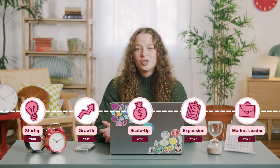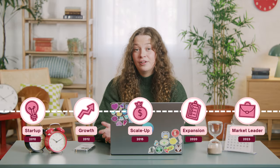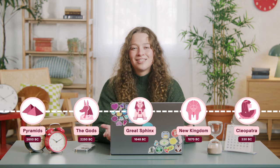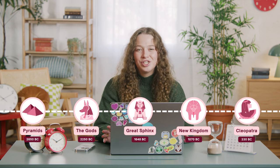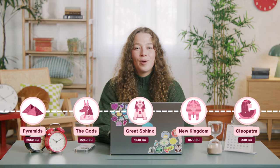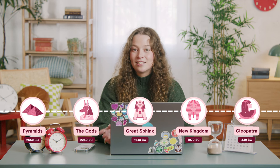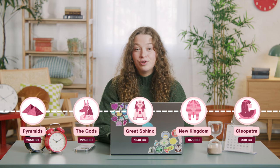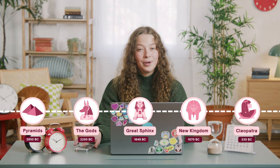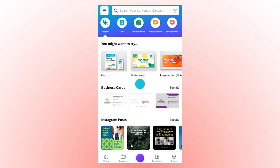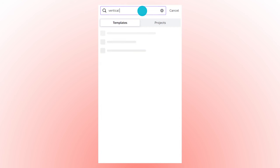Let's say you want to explore a historical event — like maybe the evolution of your business, or maybe it's a class assignment: the history of ancient Egypt. Well, a timeline is a perfect way to show how each stage led to the next. Because we're going to make it digital and easy to read on your phone, I'm going to use my phone. When I launch the app, I'll search for a vertical timeline.